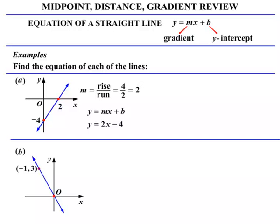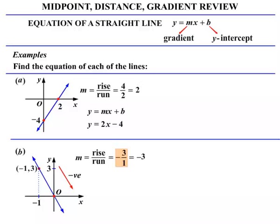In part B, the line is going through the origin and also through the point (-1, 3). M equals rise over run — going downhill, so it's negative. The rise is 3 and the run is 1, giving minus 3 over 1, which simplifies to minus 3. Using Y equals MX plus B: Y equals minus 3X. B is where it cuts the Y axis, which is at 0, so there's nothing to add. The equation is Y equals minus 3X.